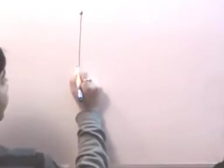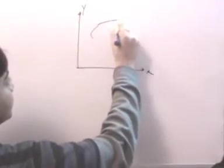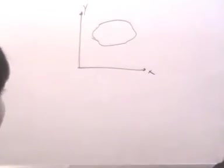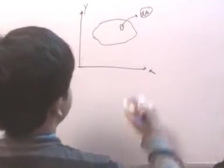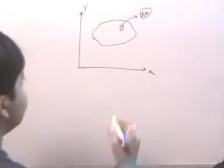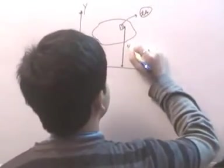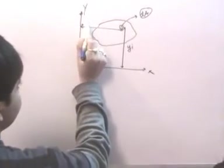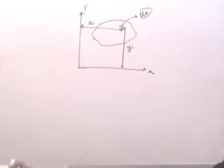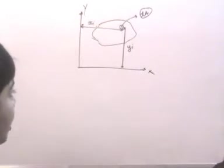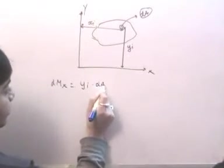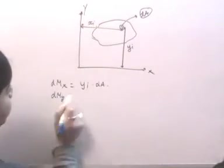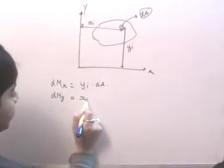Suppose I have some kind of a rigid frame of reference — this is x, this is y — and this is a body. In this body, if I assume some kind of an elemental particle of area dA, and the distance of this elemental particle with respect to the x-axis is yi and with respect to the y-axis is xi, then the moment this elemental particle has about the x-axis is dmx = yi · dA, and the moment about the y-axis is dmy = xi · dA.